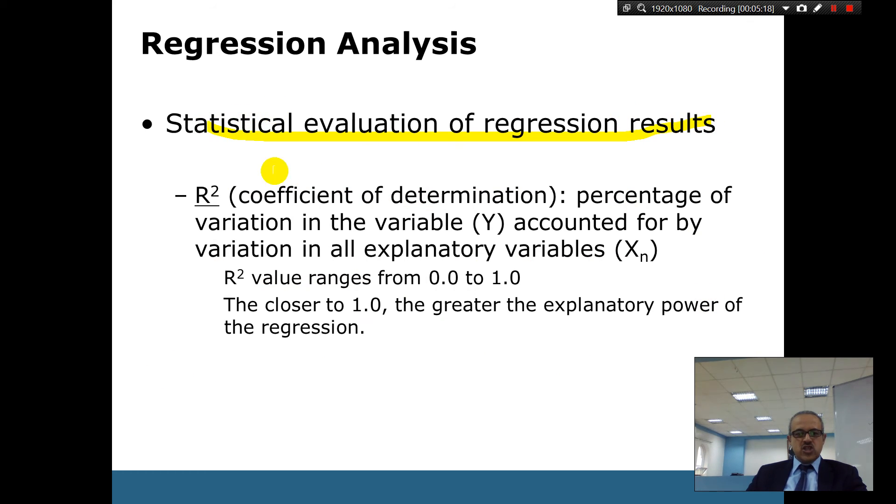Statistical evaluation of regression, we've got R squared. Now what does R squared mean? It means the percentage of variation in the variable Y accounted for by the variation in all explanatory variables. So the X1, X2, X3, X4, these are explaining Y. So how much are they explaining of Y? The R squared. In our case, R squared is 95%. It means these predictors can help us explain 95% of the variation in Y. So reliable.